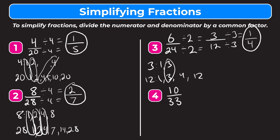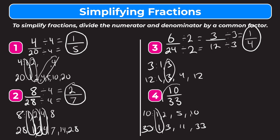Let's move on to number 4 and try 10 thirty-thirds. Listing the factors of 10: we have 1 and 10, and 2 and 5. Now the factors of 33 are 1 and 33, and 3 and 11. Looking at both lists, the only common factor is 1 — 2, 5, 10 from one side, and 3, 11, 33 from the other don't overlap. So 33 and 10 only share 1 as a common factor, which means that 10 thirty-thirds is already in its simplest form. You can't simplify it any further.